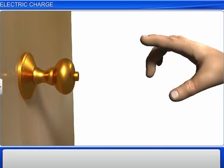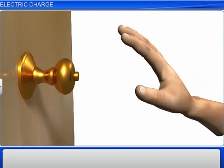Sometimes, if you touch a metallic doorknob or any metallic object, you might experience a mild shock. This is because the metallic object was charged, or in other words, it carried an electric charge.